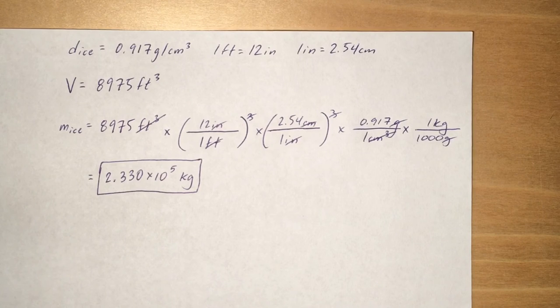And then from the initial values given in the problem, the volume was 4 sig figs. So you're going to have your answer to 4 sig figs: 2.330 times 10 to the 5th kilograms.